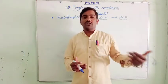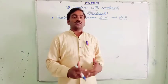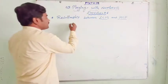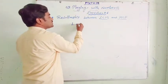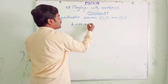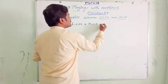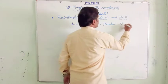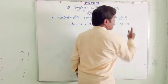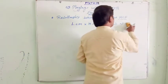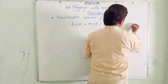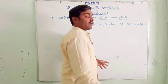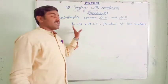Is there a relation between LCM and HCF? Absolutely, there is one relation between LCM and HCF. There is a formula. I am going to teach you that. The relation is: LCM × HCF is equal to the product of the two given numbers. This is the relation.